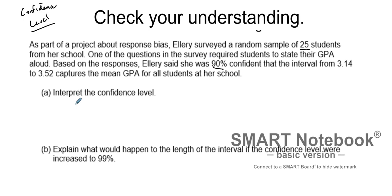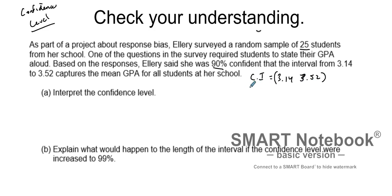Right here we have a confidence interval from 3.14 to 3.52. Now we want to interpret the confidence level, not the interval. In the past, a confidence interval interpretation would say: we are 90% confident that the true mean GPA of all students at her school is between 3.14 and 3.52. However, for confidence level, the interpretation is different.